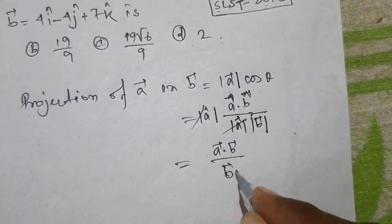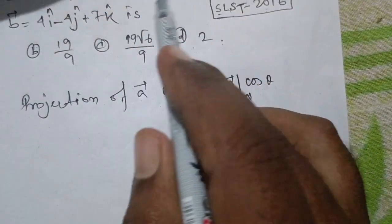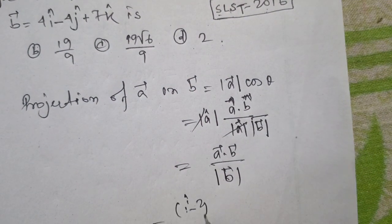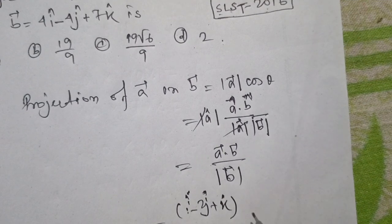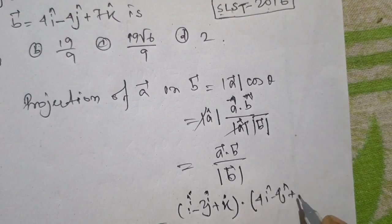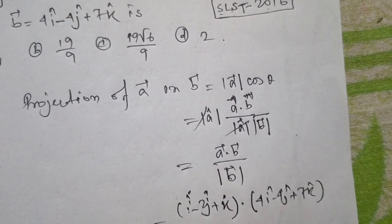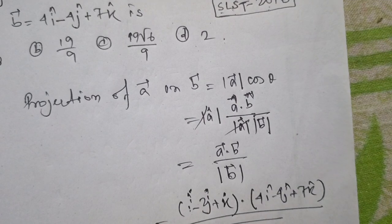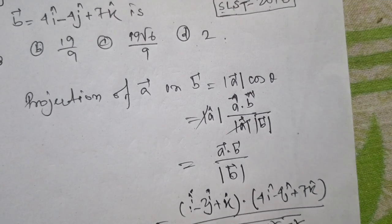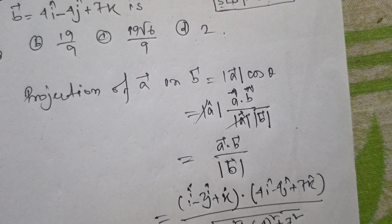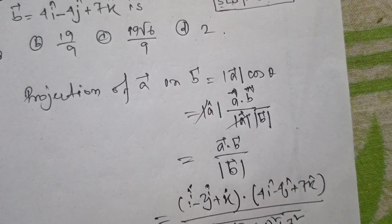The vector equals a vector: b·j plus k dot 4i, for the j, 7k. This is b vector, b vector dot a vector: 4 squared, then negative 4, squared, plus 7 squared — that gives 1 plus 8 plus...